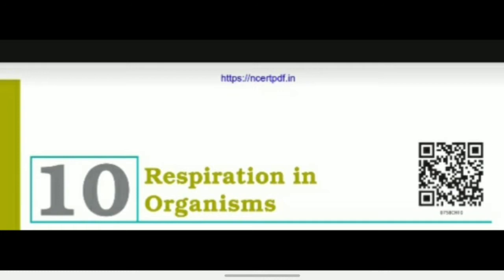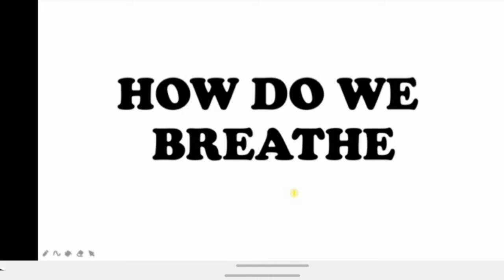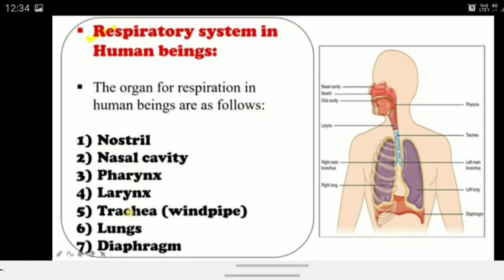Pranam everyone, my name is Megha Dayani and I'm your science teacher. We have reached the second session of Chapter 10, Respiration in Organisms. I hope you are clear about session one; if not, go watch it again. Today we are going to discuss how we breathe. The respiratory system in human beings includes various organs: nostril, nasal cavity, pharynx, larynx, trachea (windpipe), lungs, and diaphragm. A labeled diagram is also provided.